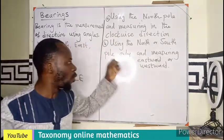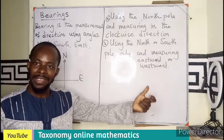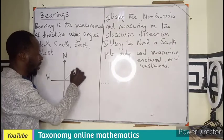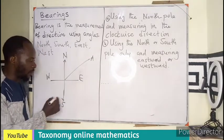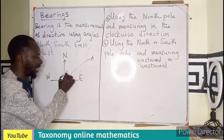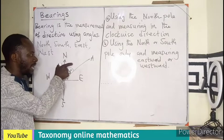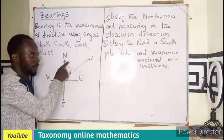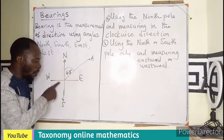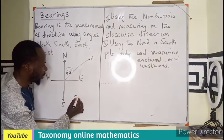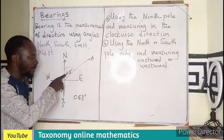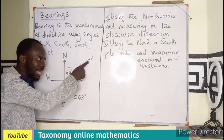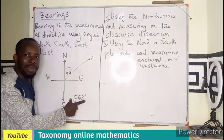Number two is using the north or the south pole only, then measuring towards the east or the west. Using the first method, for example, if I indicate a point — let's say I have a point A here — measurement is always from the center, which is the origin. If I put here 63 degrees and you are asked to find the bearing of point A, you are going to measure from the north. The bearing of A from the origin is going to be 063 degrees.